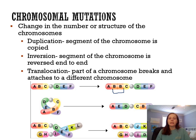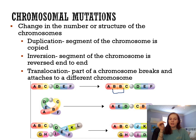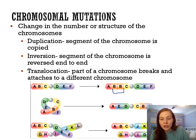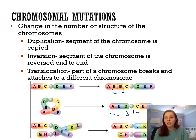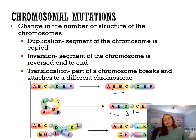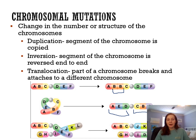The second type is inversion — the chromosome segment is reversed. Your chromosome should read A-B-C-D-E-F, but with inversion it reads A-E-D-C-B-F. This is bad because genes that should be in one position end up in another — for example, hair color genes that belong in one location are now somewhere else entirely.